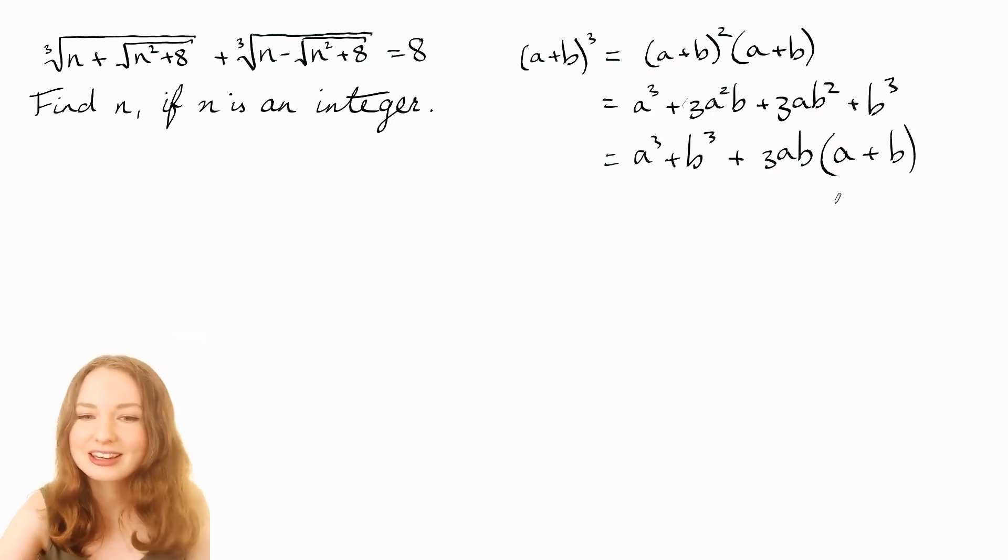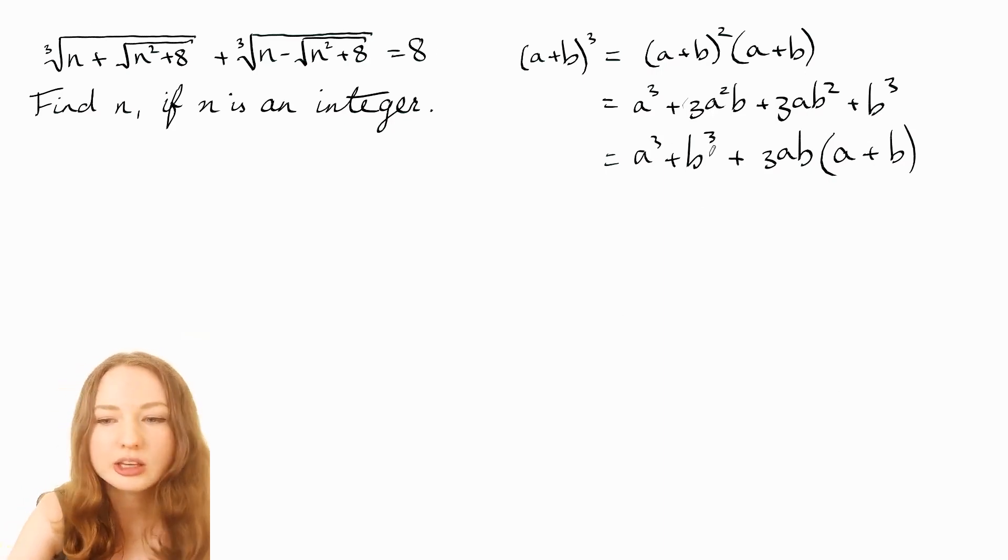But okay let's see what happens if we apply this. So we're taking this, cubing both sides, so we'll get the a³ + b³ which is just, if you cube this that will just get rid of the cube root. So n plus root, that's got plus a, that's our a³, and then we've got the b³ which is just this bit,